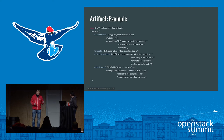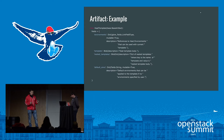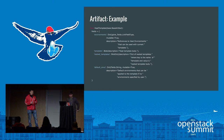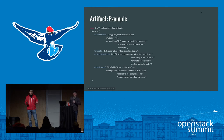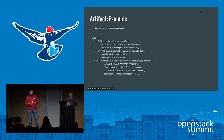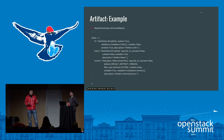Here you can see an example of an artifact definition — a real example currently implemented in master. It's a Heat template. You can see all fields like environment, the template file itself which is a blob, list of nested templates, and default environments. These default environments will be applied to the Heat template when the user doesn't specify any other environments. Common properties like ID, name, and version are defined in the base artifact, which is the parent class. We also define defaults and some filters in our metadata. We plan to prepare documentation covering all available options.